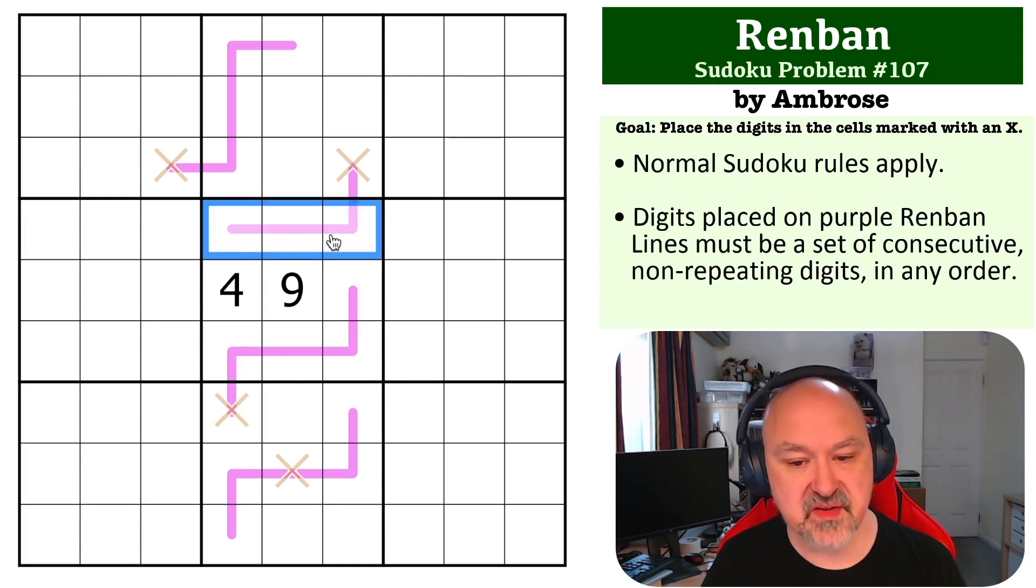So the one has to go on this line. Now when I put one on this line, this line has to be one, two, three, four, and I can't put four in any of those cells. So this becomes the four, and this becomes one, two, three.